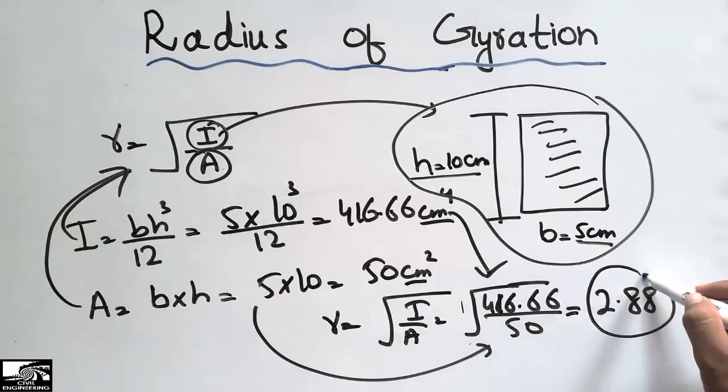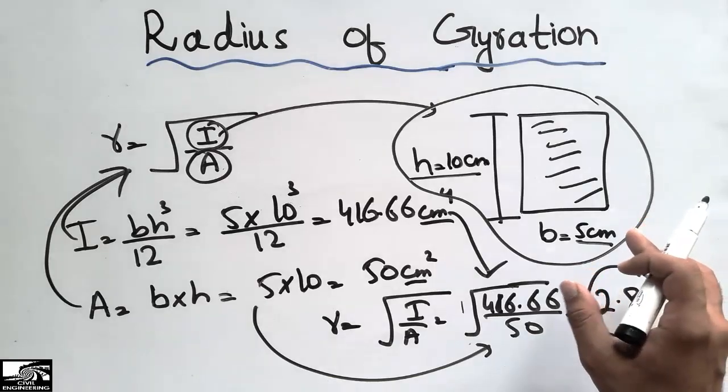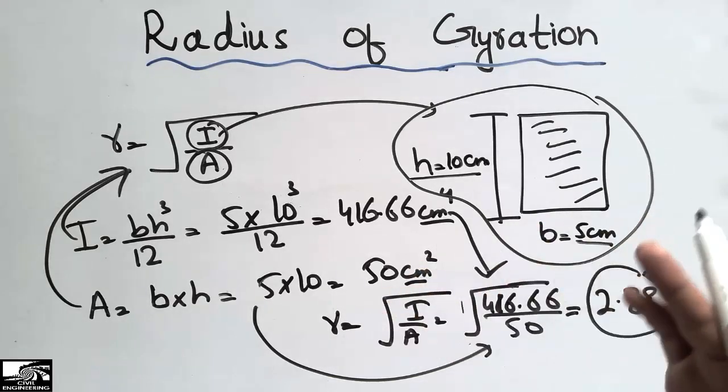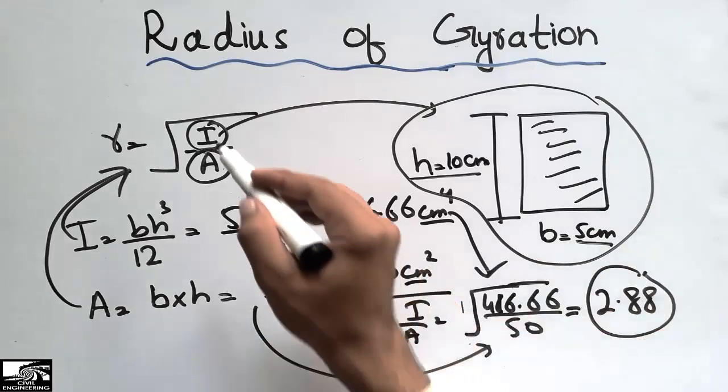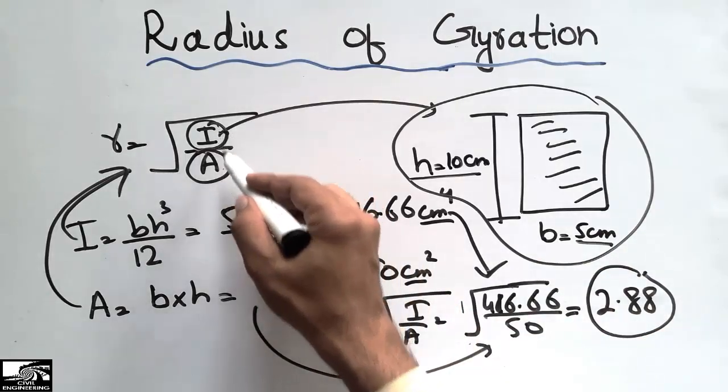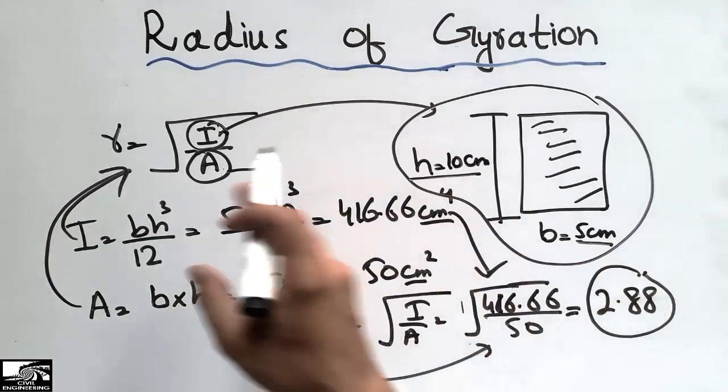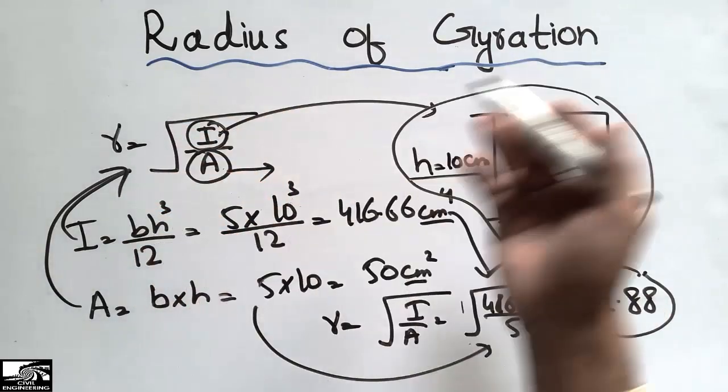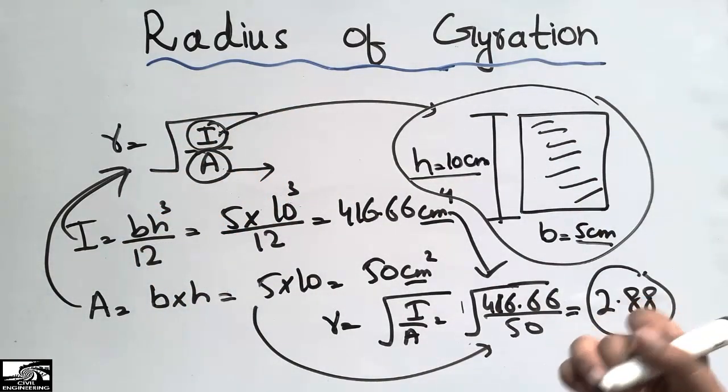You can find the radius of gyration of any object if you know how to find the moment of inertia and the area of the object. Just put these values and take the square root to find the radius of gyration of any object.